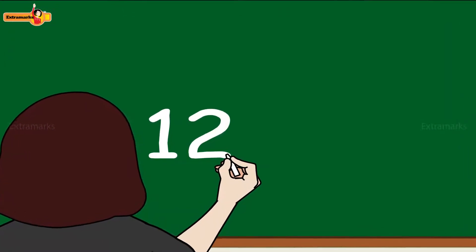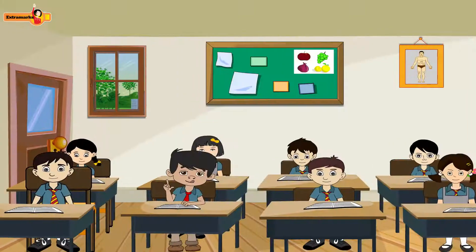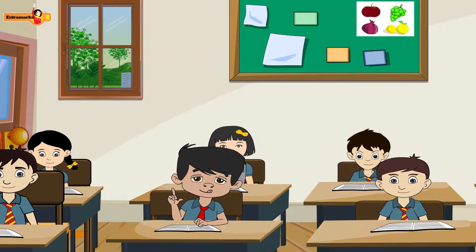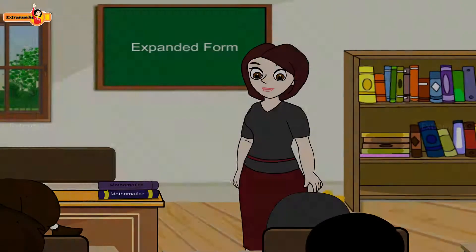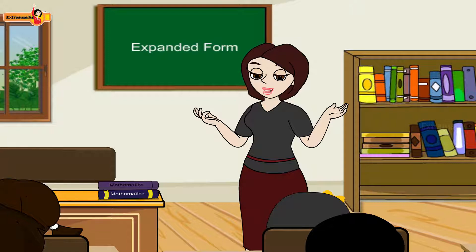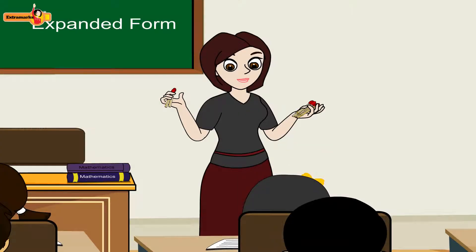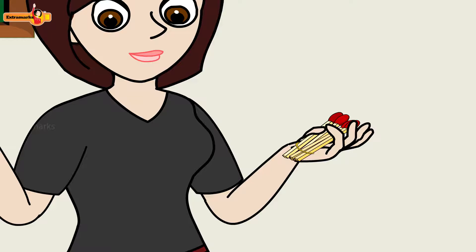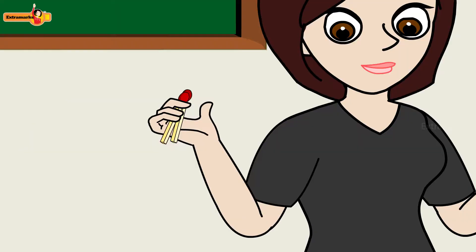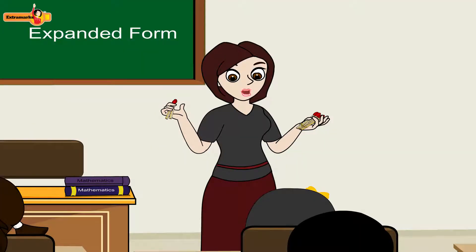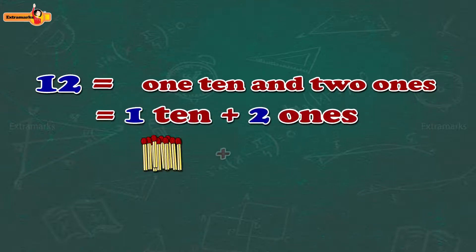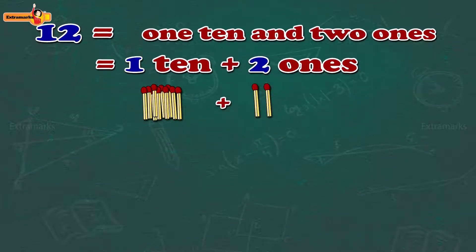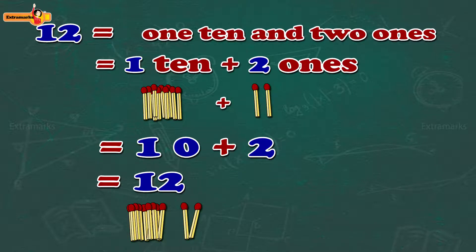The next number that she wrote was twelve. The children asked, how do we show twelve sticks, ma'am? Mrs. John replied, that is very simple, and showed the whole class a bundle of ten sticks and two sticks. I have one ten and two ones in my hand. So twelve is equal to one ten and two ones.